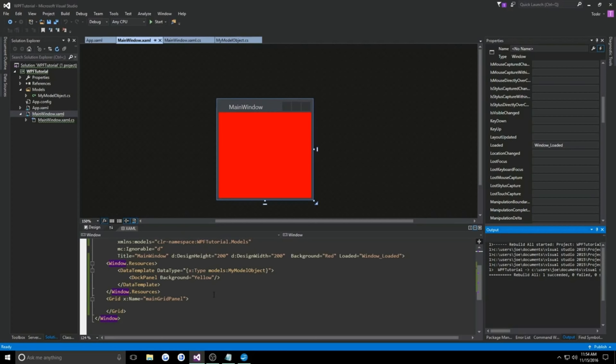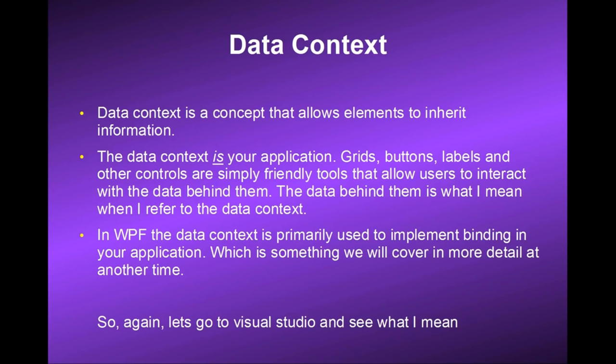Data context is a concept that allows elements to inherit information. Data context is your application — grids, buttons, labels, and other controls are simply friendly tools that allow users to interact with the data behind them. The data behind them is what I mean when I refer to the data context. In WPF, the data context is primarily used to implement binding in your application, which is something we will cover in more detail at another time.